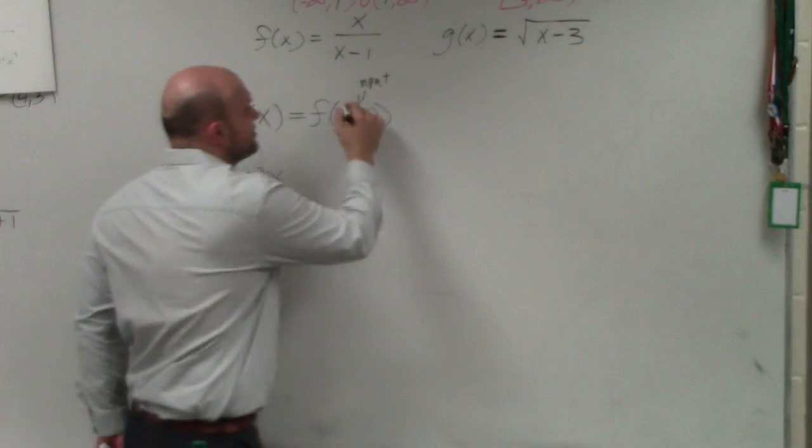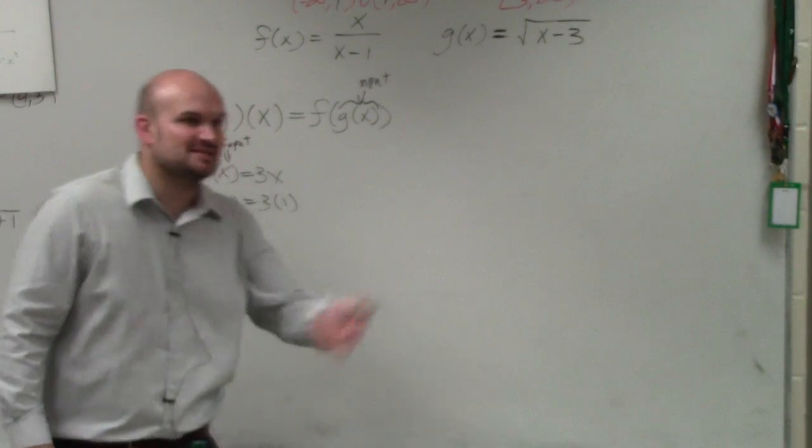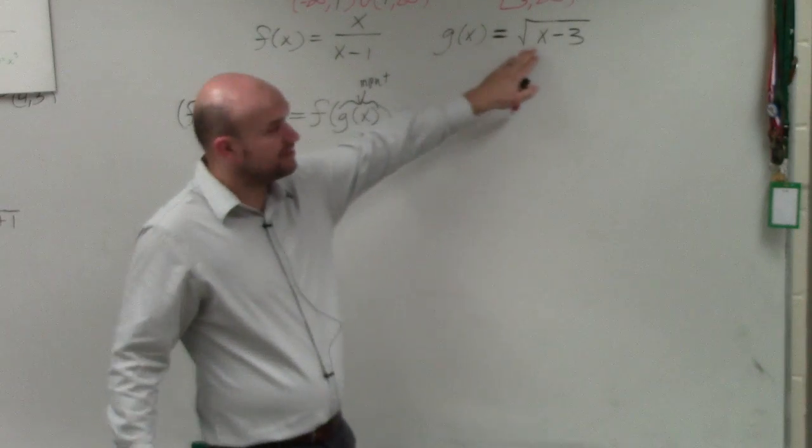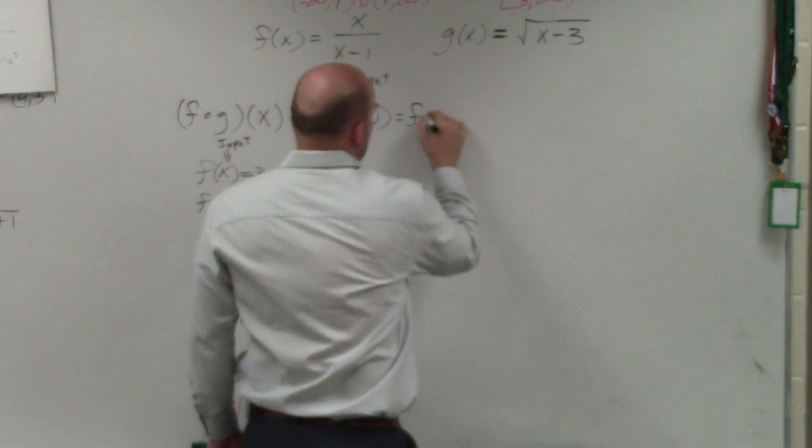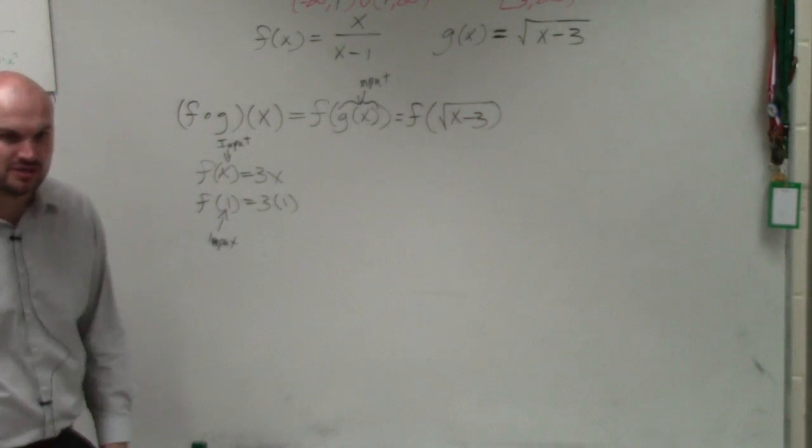g of x is the whole thing. So now, I'm not just inserting a number. I'm not inserting a variable or an expression. I'm inserting a whole function. Well, what is that function? Square root of x minus 3. So I can basically say f of square root of x minus 3 is really what I'm inputting into my function.